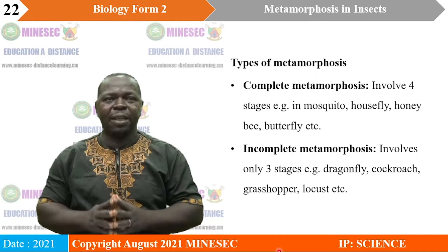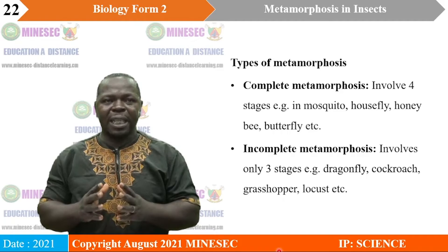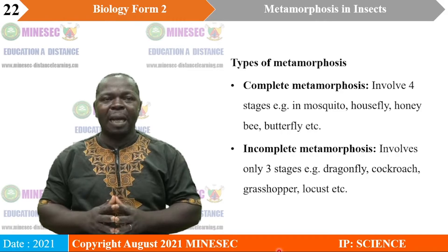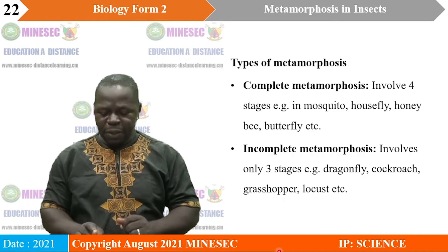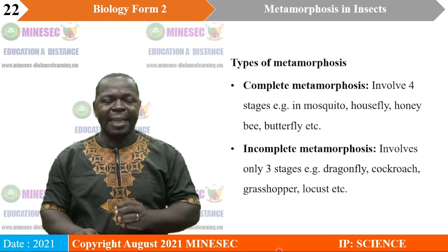Incomplete metamorphosis involves three stages: the egg, the nymph, and the adult. Typical examples of insects that undergo incomplete metamorphosis are the dragonfly, cockroach, grasshopper, and locust, just to name a few. Take note: the nymph stage resembles the adult stage, and the nymph often feeds on almost the same type of food as the adult stage.